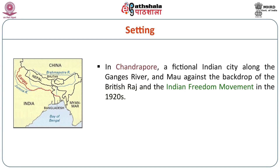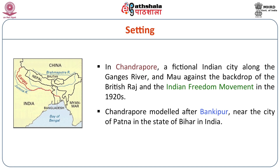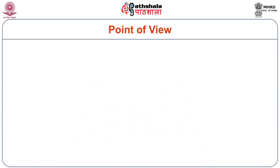The novel is set in Chandrapur, which is an imaginary place. Chandrapur can be any place, but it is believed to be modeled after Bangipur, a city near Patna. It has all the characteristics of an Indian village — it is near a river, the Ganges, and it has different types of people living there. The novelist tries to present the typical Indian people and the typical Indian culture through the presentation of the village Chandrapur.